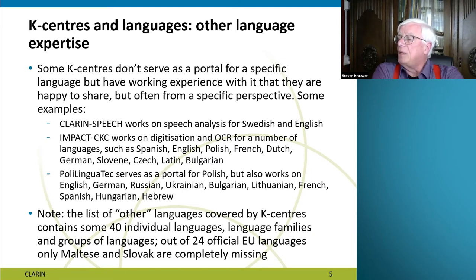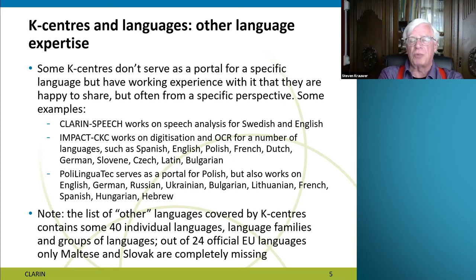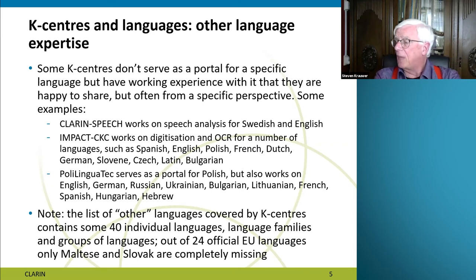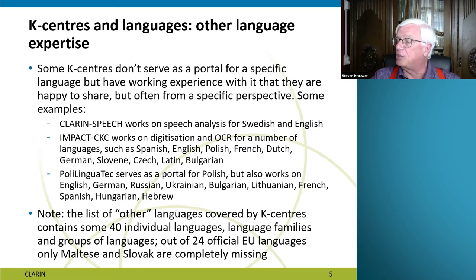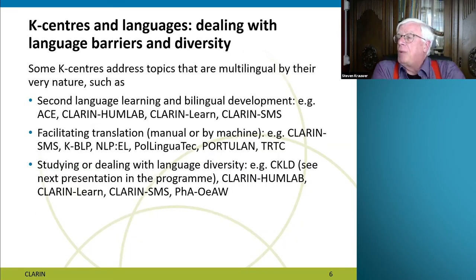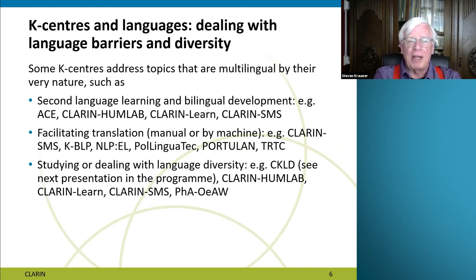The list of other languages covered contains around 40 individual languages and a number of language families and groups. Out of 24 official EU languages, only Maltese and Slovak are completely missing at this moment — which is not surprising because neither Malta nor Slovakia are members of CLARIN, so it would be very unreasonable to expect services for those languages. We also have another dimension dealing not with individual languages but with language barriers seen everywhere in Europe and language diversity.